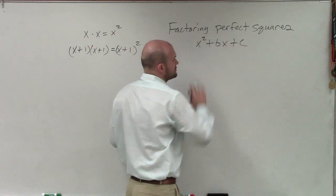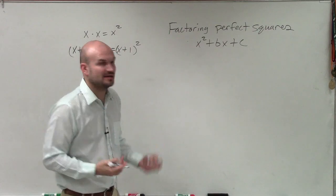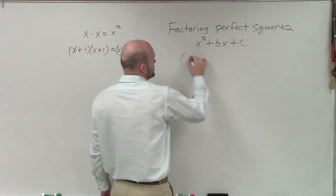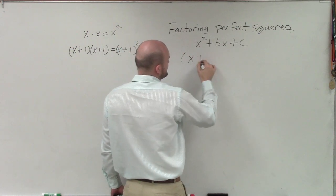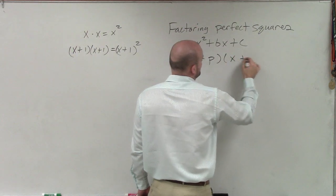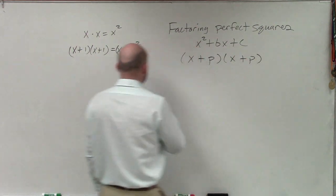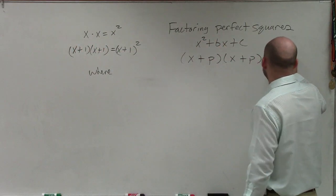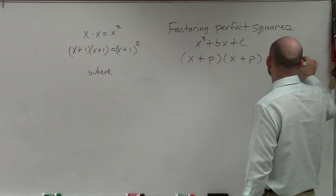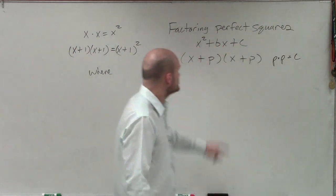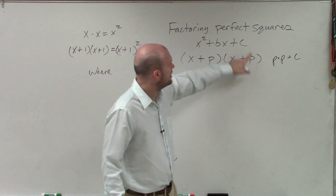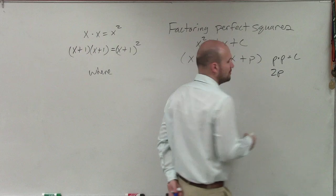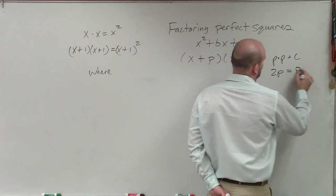So when looking at a perfect square trinomial, there's a couple of things that need to be emphasized. What we're going to have is we're going to have the exact same terms. For in this case, let's say x plus p times x plus p. Now, let's see where p times p is equal to c. Or you could say p squared is equal to c. So it's going to be the exact same values are going to multiply to give you c. And then 2p, or really just p plus p, is going to equal b.